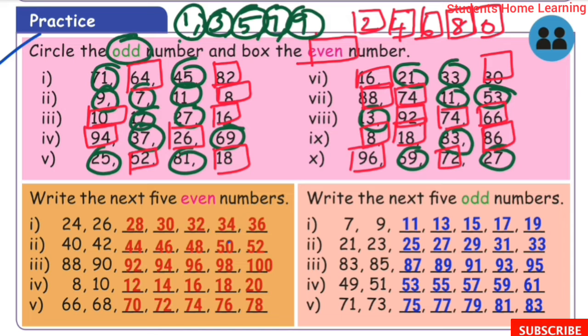Now we are going to circle the odd numbers and box the even numbers. Write the next 5 even numbers. First one: starting from 24, 26 — the next even numbers are 28, 30, 32, 34, 36.